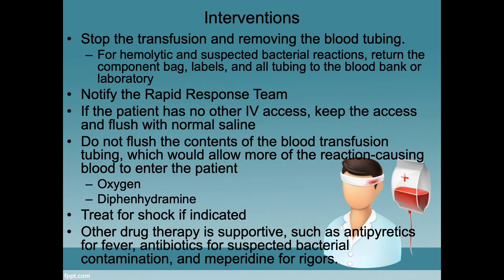Interventions for transfusion reactions include stopping the transfusion and removing the blood tubing. For hemolytic and suspected bacterial reactions, return the component bag, labels, and all the tubing to the blood bank or laboratory. Notify the rapid response team. If the patient has no other IV access, keep the access and flush with normal saline. If they do, discontinue that IV. Do not flush the contents of the blood transfusion tubing, which would allow more of the reaction-causing blood to enter the bloodstream. Instead, withdraw blood from the catheter. Administer oxygen and/or diphenhydramine as needed. Treat for shock if indicated. Other drug therapy is supportive, such as antipyretics for fever, antibiotics for suspected bacterial contamination, and meperidine for rigors.